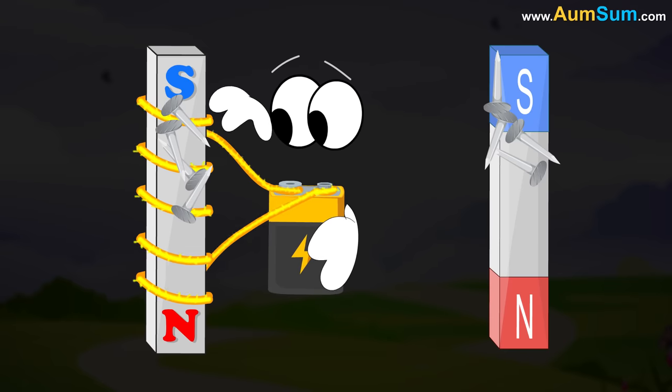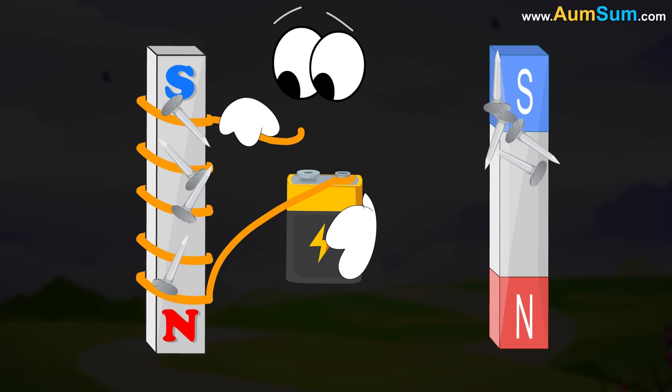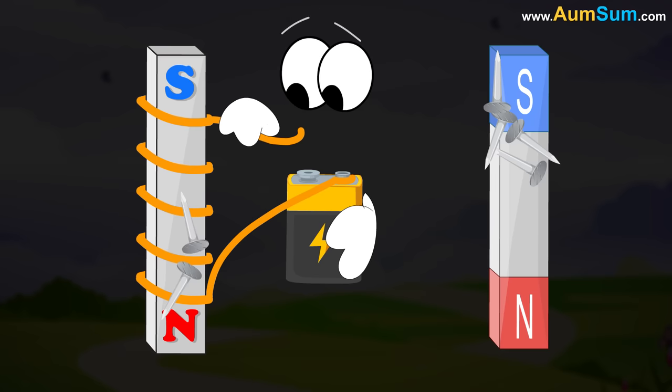The only difference is that the magnetism is not permanent. Once the current is removed, magnetism may stop working suddenly or after some time.